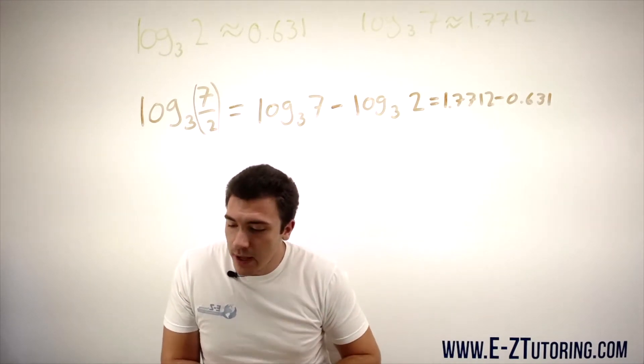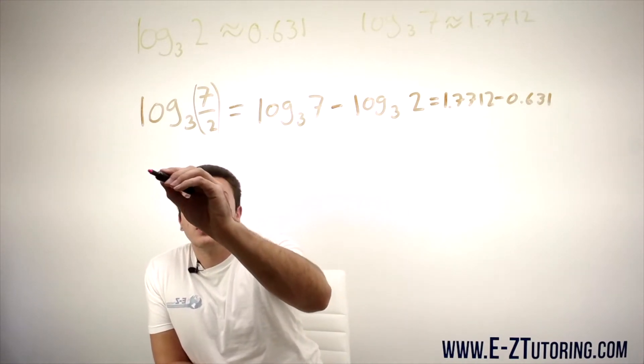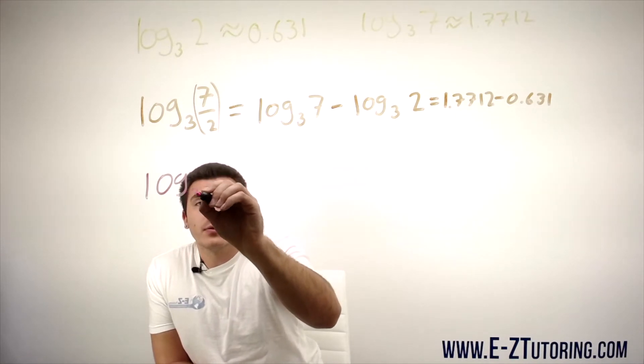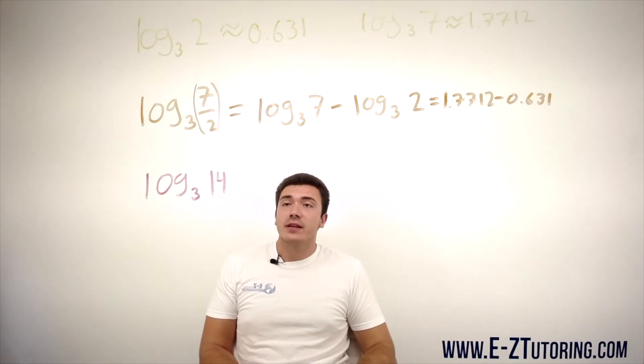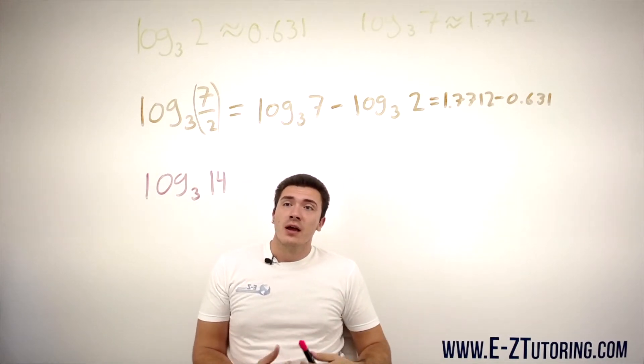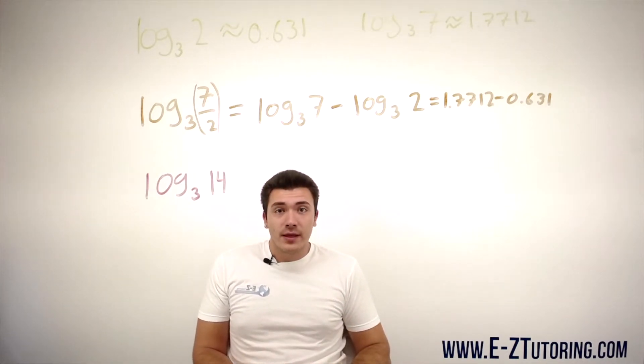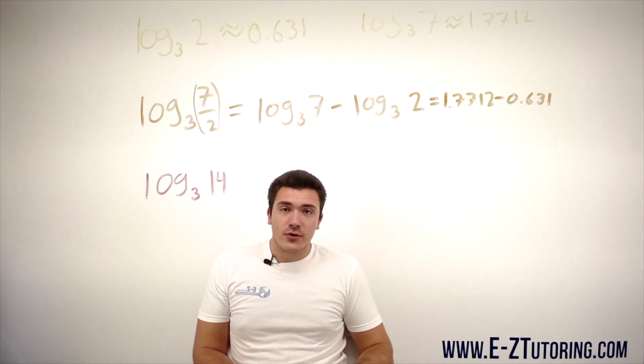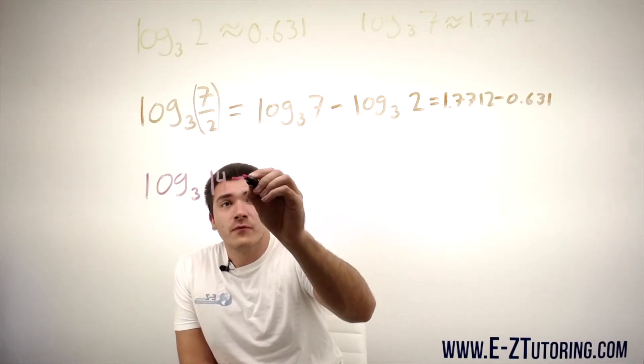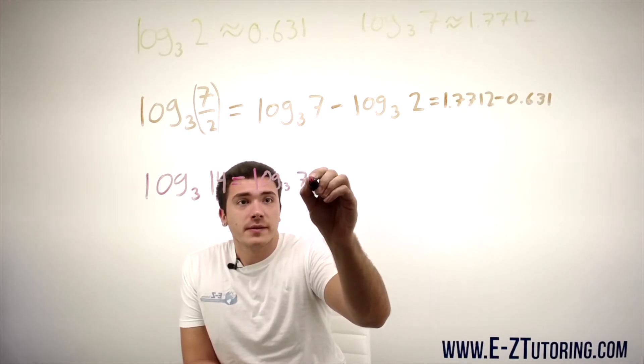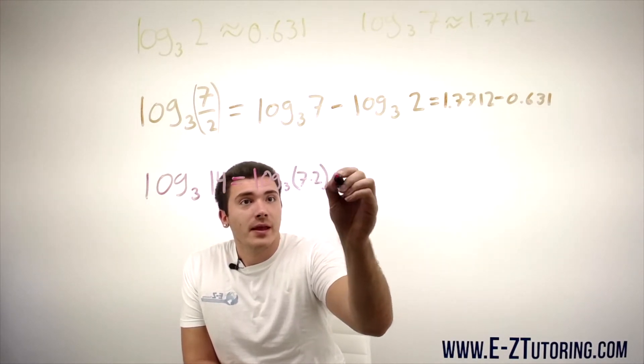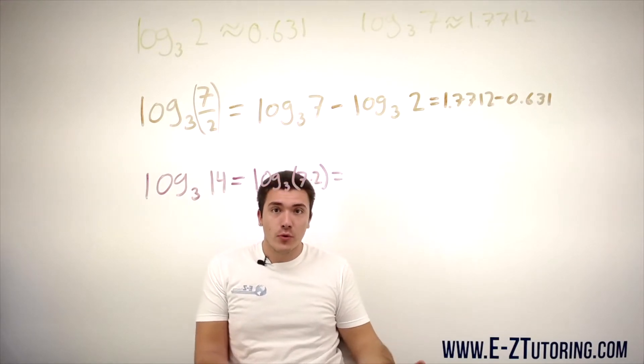So let's go ahead and do log base 3 of 14. Well, in this case we don't have a 7 and a 2 in the logarithm. So we need to rewrite 14 in terms of 7 and 2. Well, we know that 14 is simply equal to 7 times 2 and now we can use the rule of multiplication.